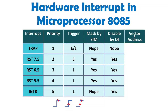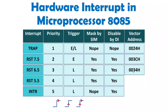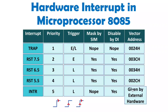Now let us talk about vector addresses. TRAP was initially named RST 4.5, so its address is 4.5 × 8 = 36, which is 0024H. RST 7.5 address: 7.5 × 8 = 60, which is 003CH. RST 6.5: 6.5 × 8 gives 0034H. RST 5.5 × 8 gives 002CH. INTR does not have a fixed vector address — it gets its address from the instruction provided by external hardware.